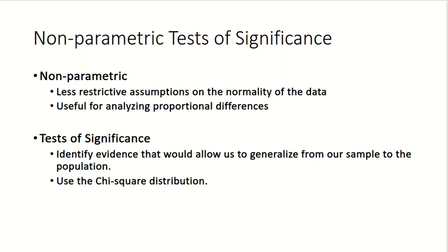Nonparametric tests of significance are different from other tests of significance, mainly because they have fewer assumptions about the distribution of the data we're working with, and normality is one of the assumptions we're not enforcing with this particular body of tests. This is useful as we'll be examining proportional differences for nominal or ordinal level data.